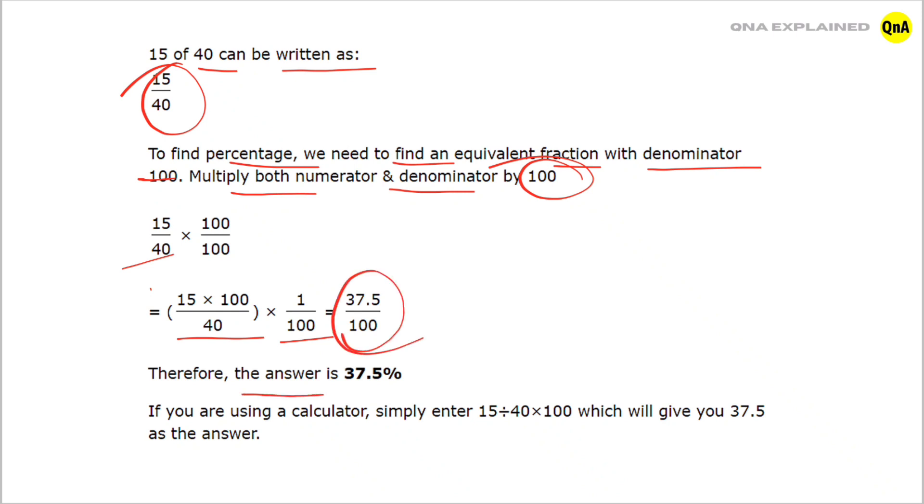Therefore, the answer is 37.5%. If you are using a calculator, simply enter 15 divided by 40 into 100, which will give you 37.5 as the answer.